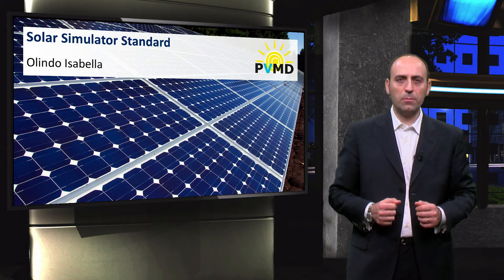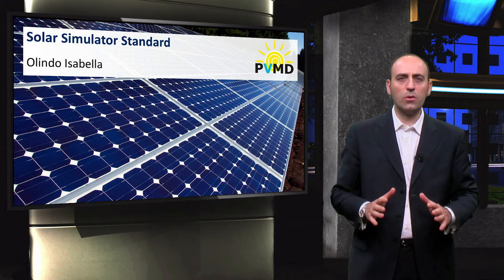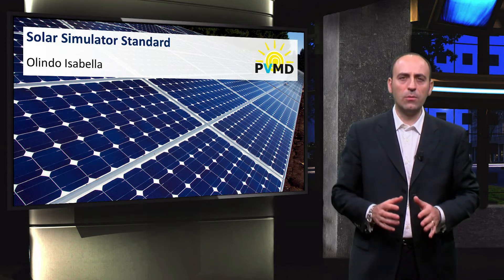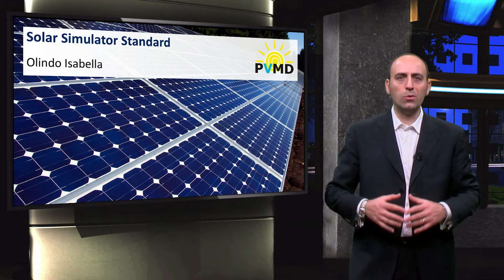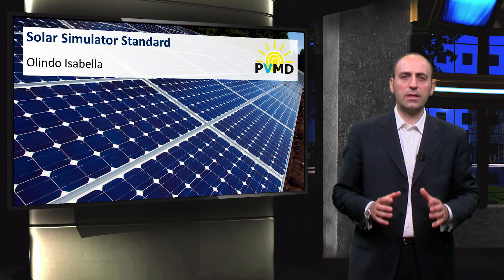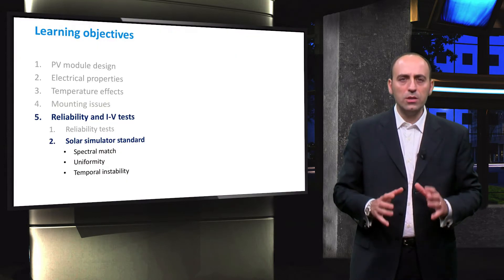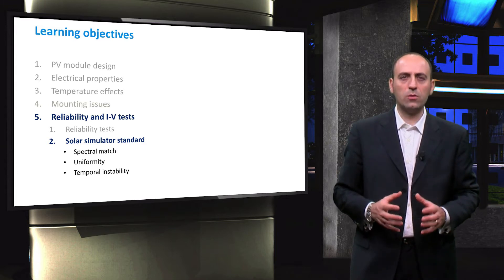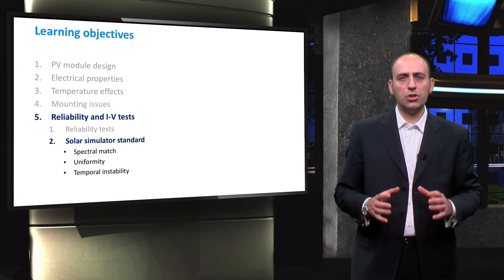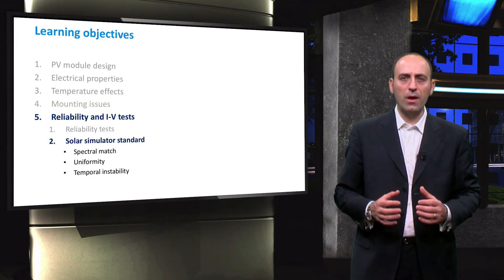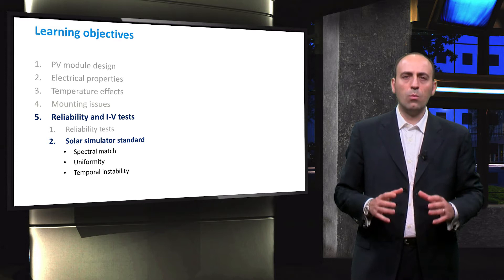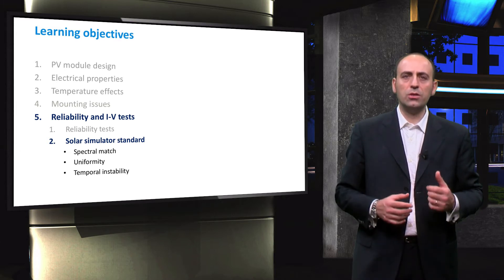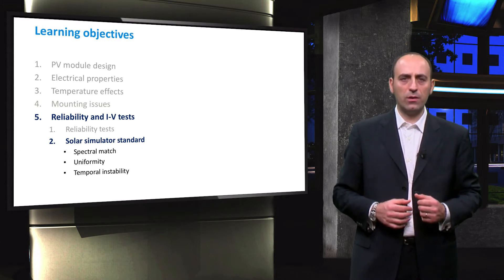In order to compare the characteristics of different PV modules, it is extremely important to test the modules at the same conditions, and that's why all the industries use the standard test conditions. This video deals with the main issues of replicating the solar spectrum with a solar simulator, ensuring a relatively independent comparison and output evaluation of different solar modules. We will analyze the spectral match, the uniformity, and the temporal instability.